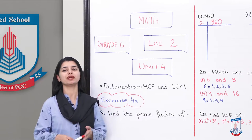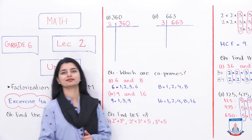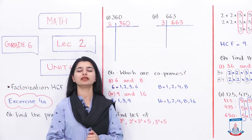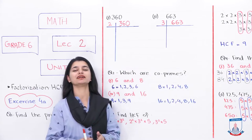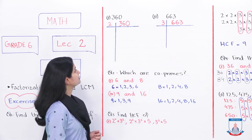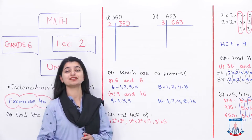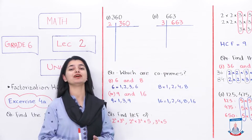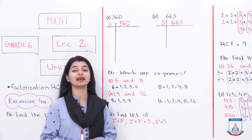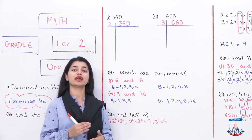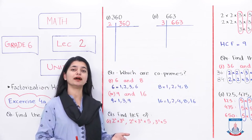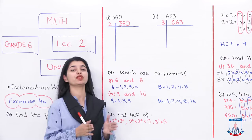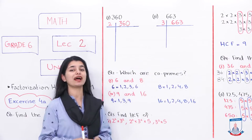Which way will it be? Let's look at it. For question number 1, we will do the first two parts and the remaining two you are expected to do on your own. If we look at the first one, they want you to make prime factors of 360. For that, you will see which prime factor 360 is divided by first, because we start from the smallest factor which is 2.